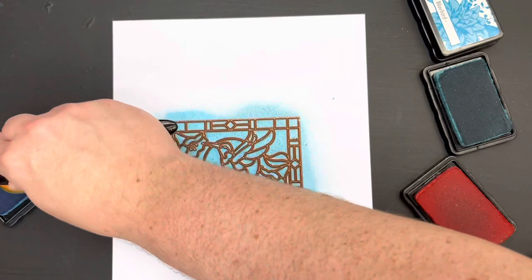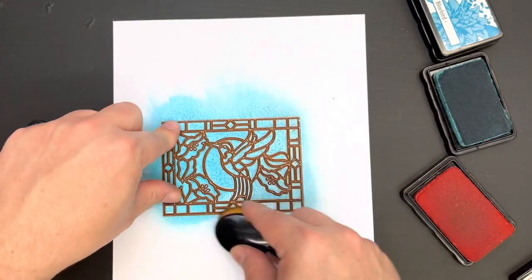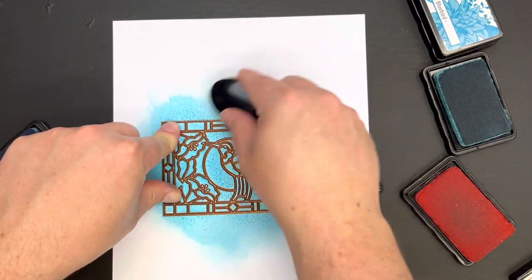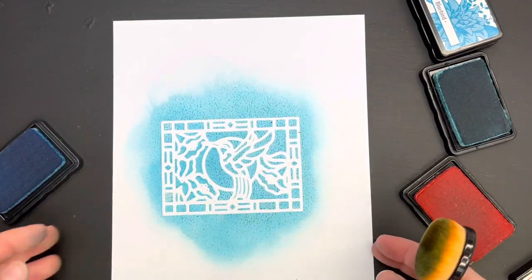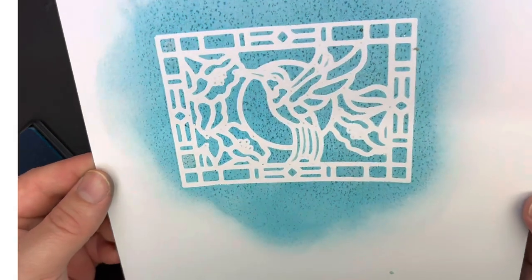You could blend this, you could color this, you could use your misters again. You can use a whole host of different ideas but it's just a way of showing you how not only can you use these as a die we can also use them as a stencil which might come in really handy for you.